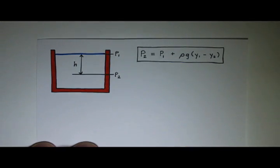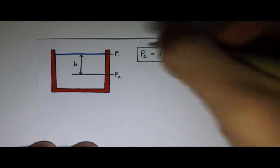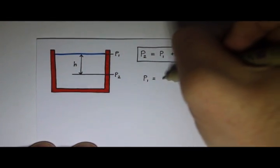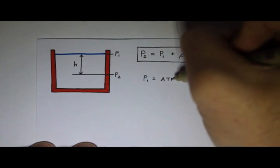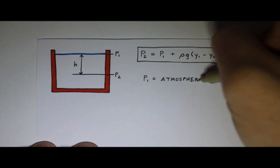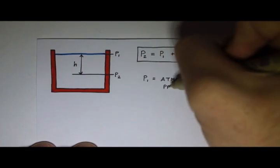So there's a couple things we can say here. First of all, if p1 is the surface, well then that's just atmospheric pressure. If our container is open to the air, then p1 will just be atmospheric pressure.